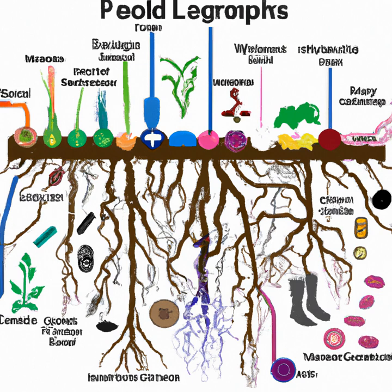In conclusion, microbes are essential for soil fertility, and they play a vital role in food production. The soil is a complex system that is filled with life, and microbes are an essential part of it. By understanding the role of microbes in soil fertility, farmers can take the necessary steps to maintain healthy soils and ensure the growth of healthy crops.